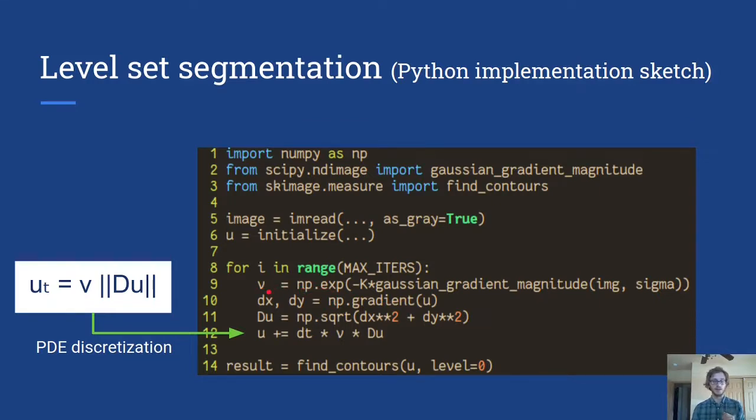The next step is to construct this gradient magnitude of u term which we do in the two subsequent lines and then we update with a discretization of this PDE and if you know anything at all about numerical solutions for partial differential equations even though this is not quite the right approach it's unstable and things like that but it'll suffice for now for illustration. And then finally after done looping we get the final results by running find contours on u with level equal to zero and that gives us actual contours that we can plot on top of images.